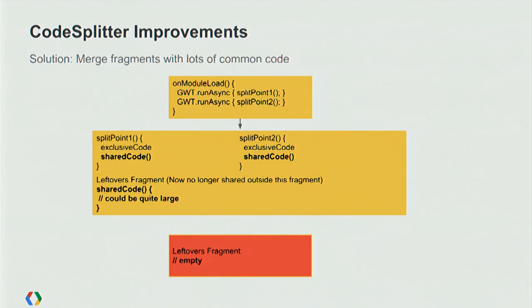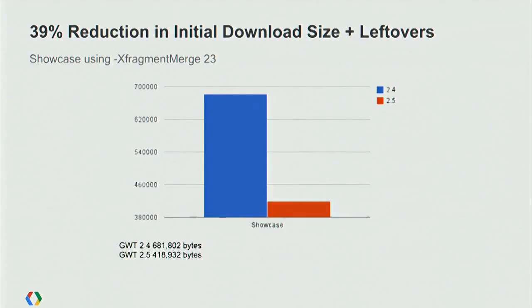What kind of effect can this have on an application like Showcase? A 39% reduction in the initial JavaScript code size that your application has to load before it can present the UI to the user. The first time I saw this, I thought we had a bug in the compiler and it was removing too much code — but I've measured it several times and it's true. Thirty-nine percent code size reduction.